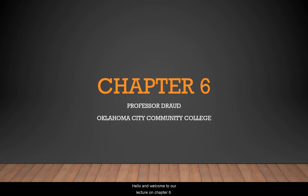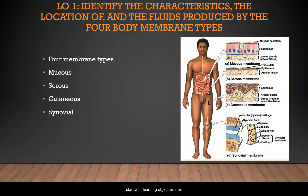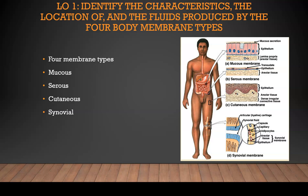Welcome to our lecture on Chapter 6. Today we'll talk about a few different things, but we'll start with Learning Objective 1: identify the characteristics, the location of, and the fluids produced by the four body membranes. The four membrane types are mucous, serous, cutaneous, and synovial.